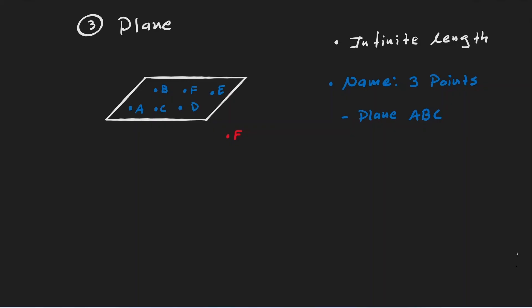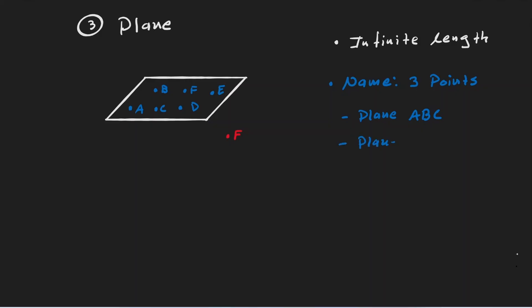Also, I could have chosen other three points — B, E, D — so I could have named this plane BED. As you can see, there are many possible names. All we need is to identify three different points that are within the plane. It would not be okay for us to choose point F when we want to give a name to the plane, because F is not on the plane.